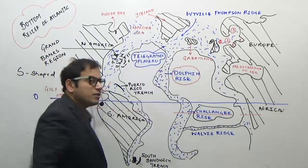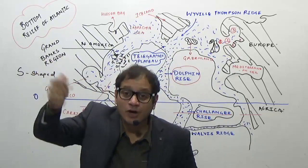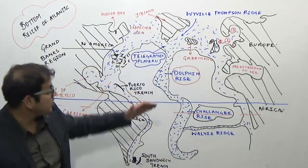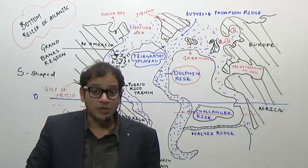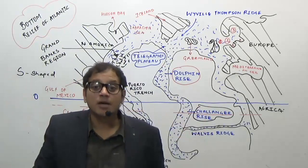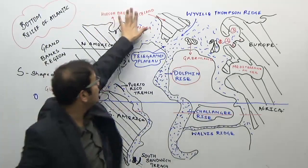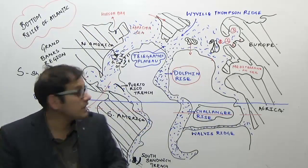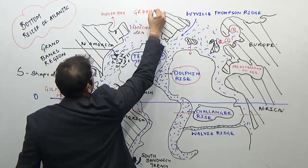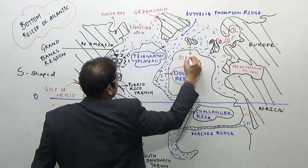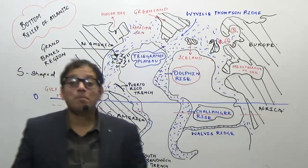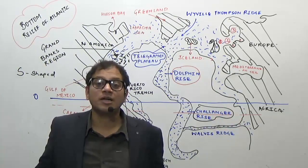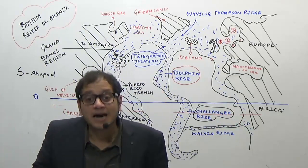In the examination, the Telegraphic Plateau is the northern part of the Dolphin Rise. The Dolphin Rise is the name of the mid-Atlantic ridge in the northern hemisphere, and an extension of the Dolphin Rise is known as the Telegraphic Plateau. Sometimes the height of this ridge becomes so high that it gets projected above the surface of the oceans — it comes out of the water surface as the Greenland region and Iceland region.